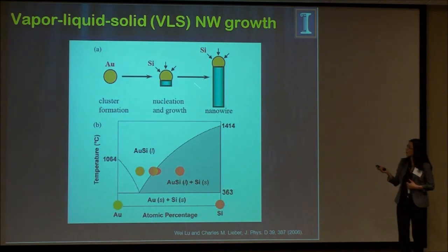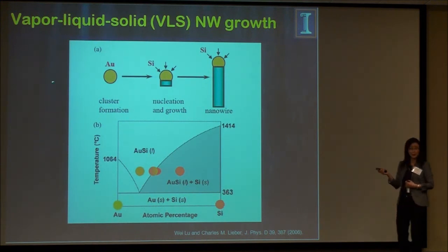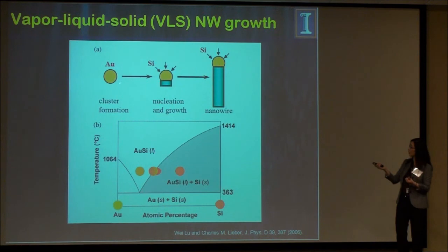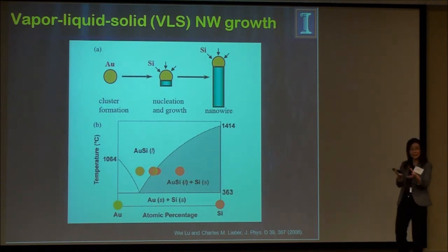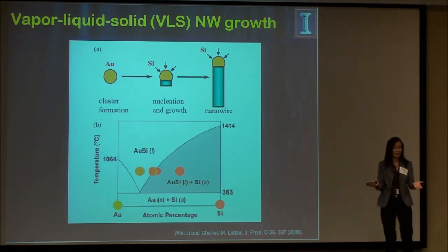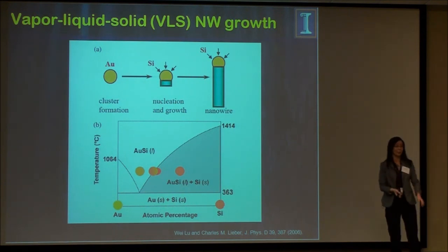The way we grow nanowires uses the commonly used technique called vapor-liquid-solid (VLS). You take a metal — we use gold — and heat it to a temperature where gold becomes eutectic. Silicon is absorbed into the gold particle. At the growth temperature it's a liquid, and as you keep feeding silicon into the droplet, it reaches supersaturation. Once supersaturation is reached, it enters a two-phase region with liquid and solid phases. The solid phase is the semiconductor, and it deposits at the lowest-energy interface — the particle-substrate interface. That's how we grow the wire.